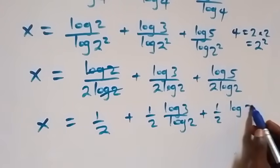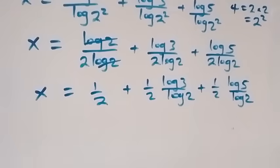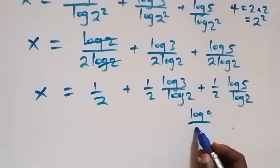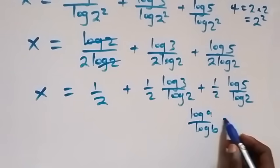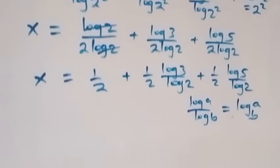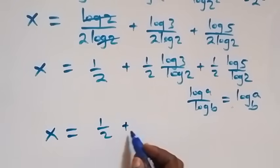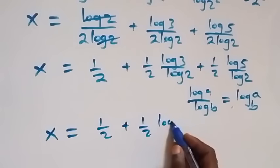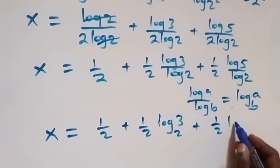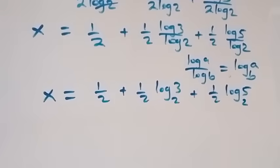Plus log 5 over log 2. Applying the change of base formula — log a over log b equals log a to base b — what we have becomes x equals one half, plus one half log 3 to base 2, plus one half log 5 to base 2.